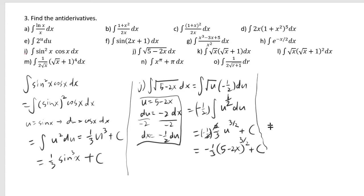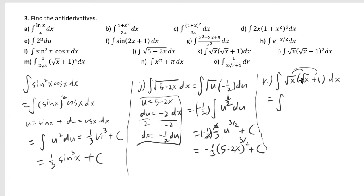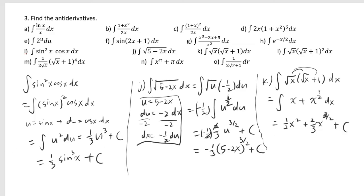For part k, the integral of square root of x times square root of x plus 1. While this looks like a nested function, the derivative of square root of x is 1 over 2 radical x, which is not present. So just multiply it out: square root of x times square root of x is x, and square root of x times 1 is x to the 1 half power. Then x integrates to 1 half x squared, and x to the 1 half integrates to 2 thirds x to the 3 over 2, plus c.